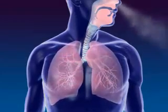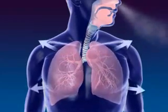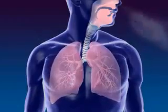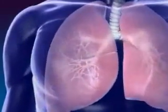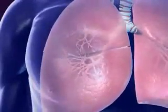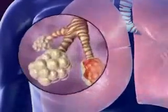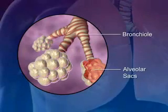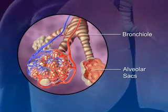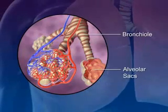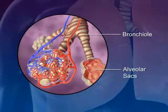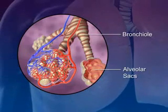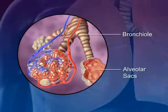Lungs are spongy tissue with alveoli and blood capillaries. Breathing occurs because of the expansion and contraction of the lungs. The bronchi carrying the air subdivide into smaller branches called bronchioles. At the end of each bronchiole are the alveolar sacs, which are surrounded by blood capillaries and contain millions of single-layer alveoli cells where gas exchange takes place.